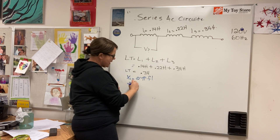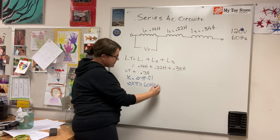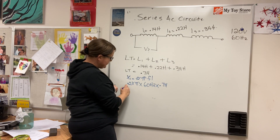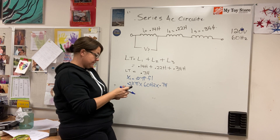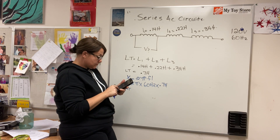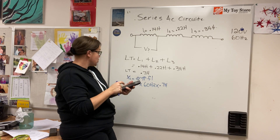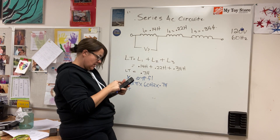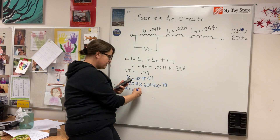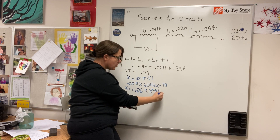Two times pi is our constant, frequency is 60 hertz, times L total of 0.7 henrys gives me XL total for the circuit. Two times pi times 60 times 0.7 gives me an XL total of 263.894 ohms.